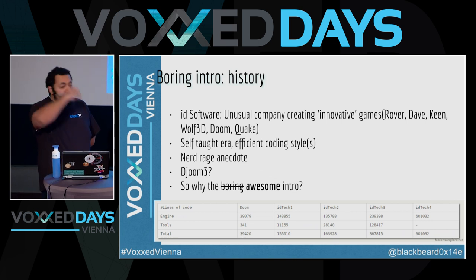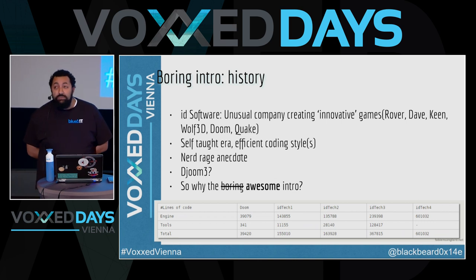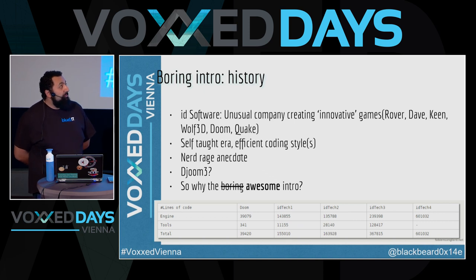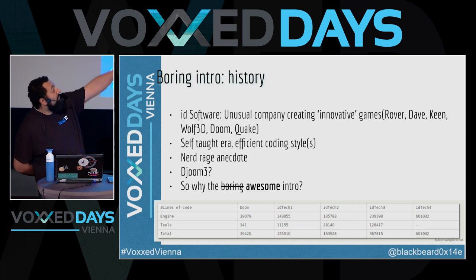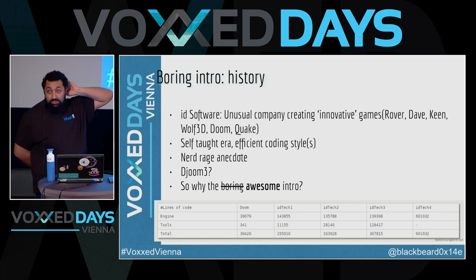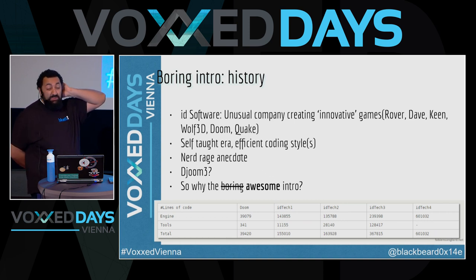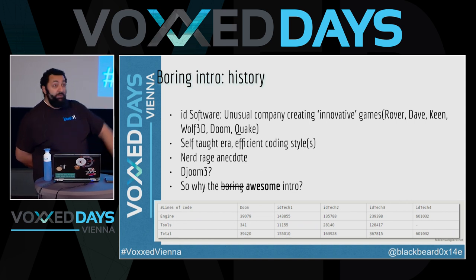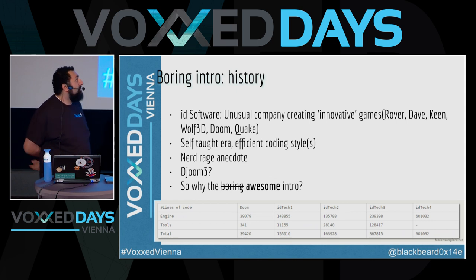Another cool thing they did is they open-sourced almost everything they created. That's pretty cool — it's progressive. Wolf, Doom, Quake — these are triple-A games, so to open-source something like that back in the 90s is pretty interesting. Everybody has hacked and modded Doom to oblivion, and it's amazing. They come from a very different era.